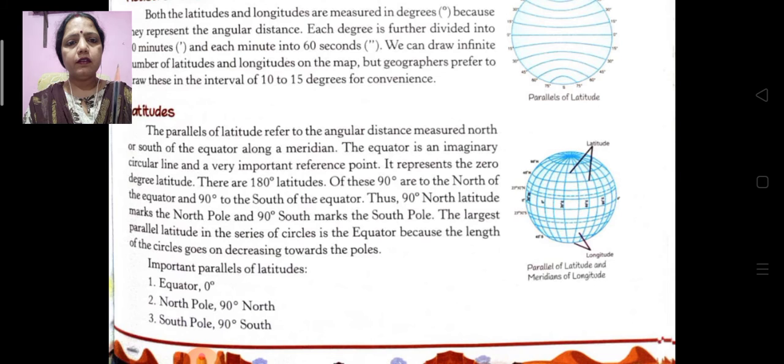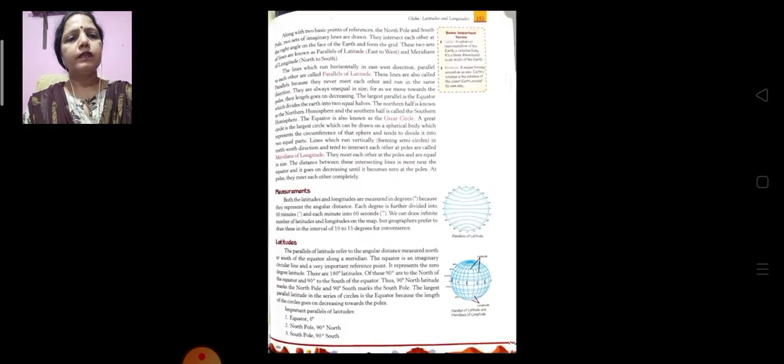So here you can see the important parallels of latitudes. Number one, equator at 0 degrees. North pole at 90 degrees. And south pole also at 90 degrees. So now here you can see the picture of parallels of latitudes and meridians of longitudes. So now turn your page.